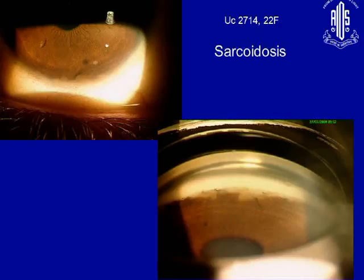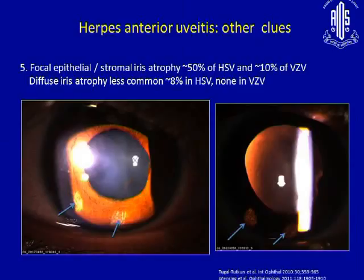You will see these kind of granulomatous deposits in sarcoid, whereas you don't really see these kind of deposits in infectious uveitis. Other clues include the presence of focal iris defects — you must look for focal iris defects when you are suspecting viral uveitis.